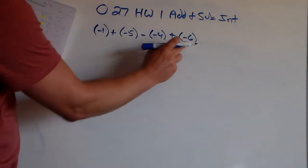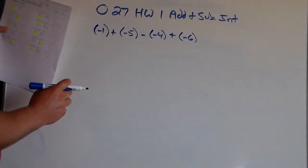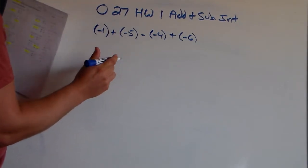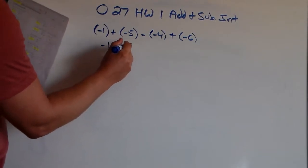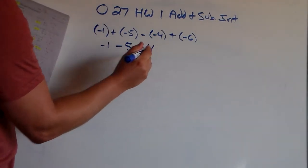Notice each one of these numbers, they're all integers. None of them have any variables, or x's, or y's, or any other letters. So what we know, a plus and a minus, that simplifies down to a minus. So we have negative 1 minus 5. These two negatives turn into a positive, so that's a positive 4.